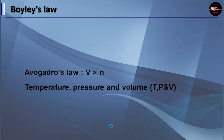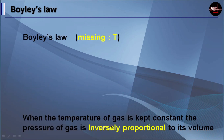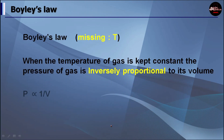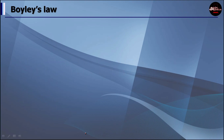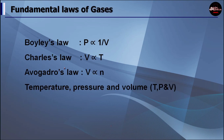Let's take a look at Boyle's Law first. In Boyle's Law, V represents the volume, and we look at the missing T — temperature is kept constant. The V represents the volume, and it has two letters involved.